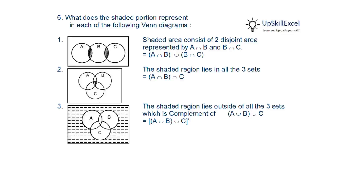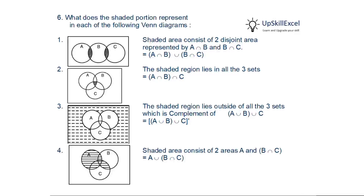In the third diagram, the shaded region is outside A, B, and C. The unshaded portion is A union B union C, so the outside area is represented as (A union B union C) complement. In the fourth diagram, the shaded area is part of A plus the intersection of B and C, so it can be written as A union (B intersection C).